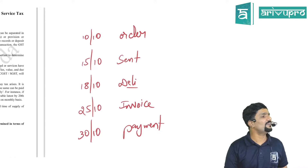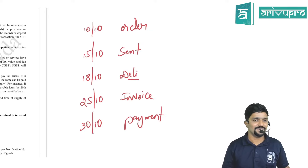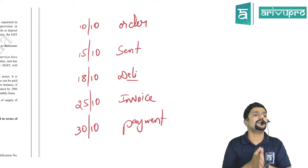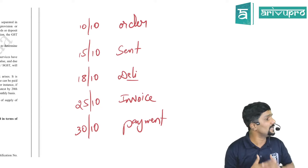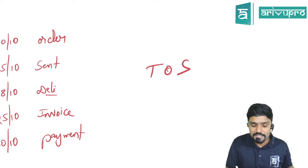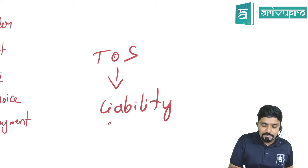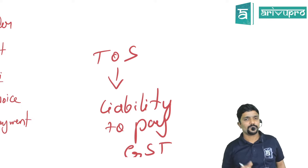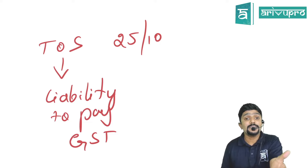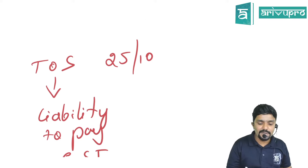Since different events happen on different dates, it is very important for the person who is liable to pay GST to decide what is the Time of Supply, because that is the date on which the liability to pay is created. Assuming 25th October is the Time of Supply — on that day supply is deemed to be made, which means liability is created on that day. But that is not the same as the due date — the due date for payment would be 20th of the next month.